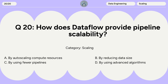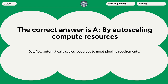Question 20: How does Dataflow provide pipeline scalability? A. By autoscaling compute resources. B. By reducing data size. C. By using fewer pipelines. D. By using advanced algorithms. The correct answer is A. By autoscaling compute resources. Dataflow automatically scales resources to meet pipeline requirements.